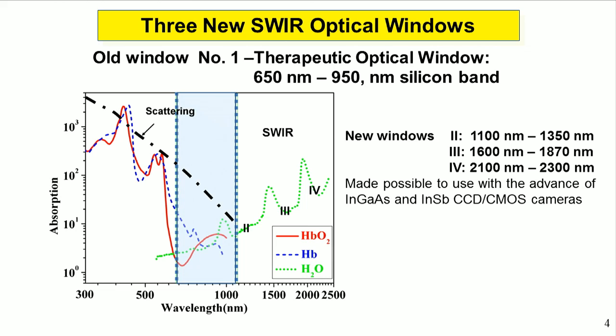Over the years, 650 to 950 nanometers was used to go into tissues, and that's why most people use 800 nanometers. That is the first window, and it was only because of silicon detectors. With the advent of indium gallium arsenide and indium antimony photodetectors, it allows us to go into the SWIR — short wavelength infrared.